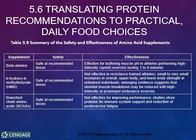Beta-alanine is an example of a supplement that may be effective in buffering muscle pH in athletes who perform high-intensity exercise lasting between one to four minutes — sprinting would be an example.